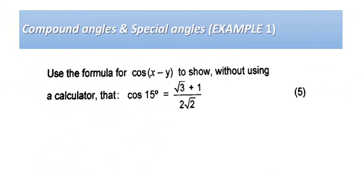Here's the formula for cosine of (x − y). Show without using a calculator that cosine of 15° equals (√3 + 1) all over 2√2. The key thing here is 'without using a calculator' — that tells us we need to use special angles. You can't just type cosine of 15° into a calculator; you need to prove how you get there by applying special angles.